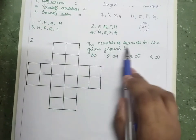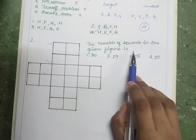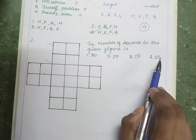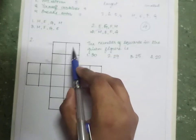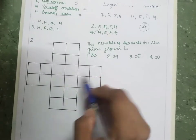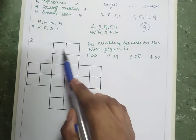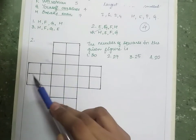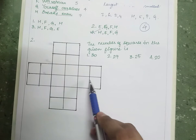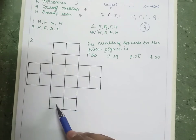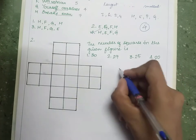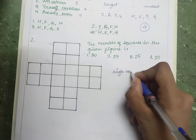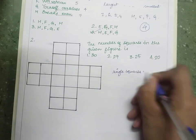Next question: the number of squares in the given figure is 30, 29, 25, or 20? Let's first count the individual squares present in this structure: 1, 2, 3, 4, 5, 6, 7, 8, 9, 10, 11, 12, 13, 14, 15, 16, 17, 18, 19, and 20. So single squares equal 20.